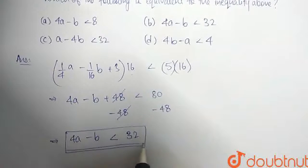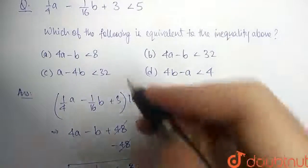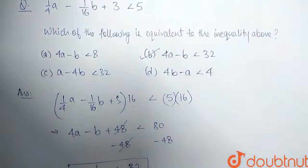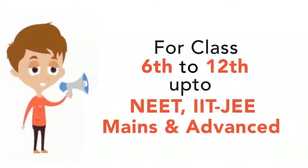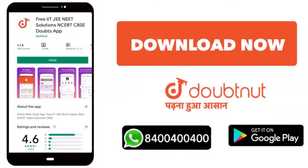The inequality gets simplified to 4a minus b is less than 32. Comparing with the options, we see option b is correct. Thank you very much.